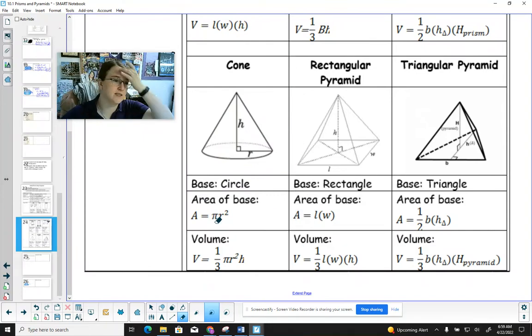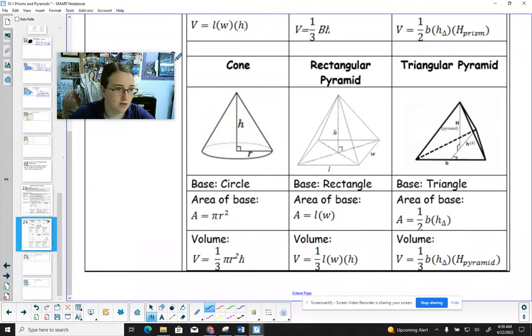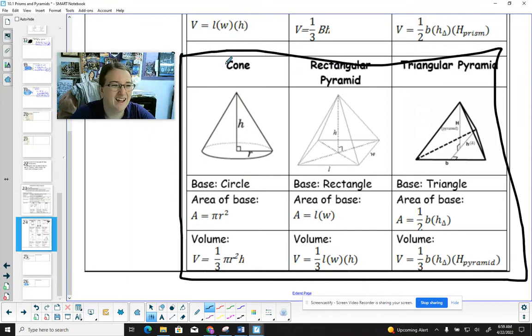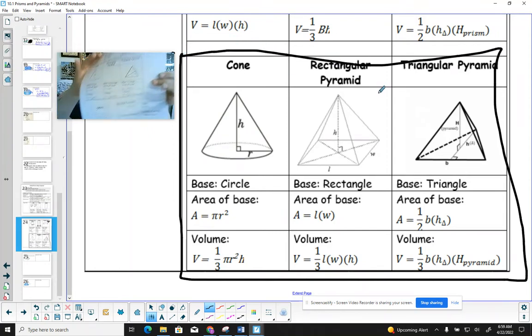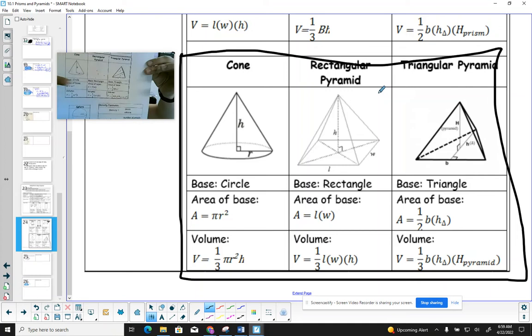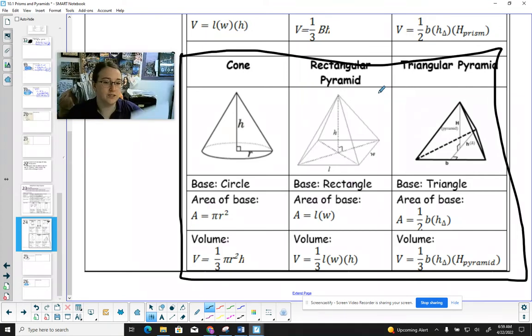Okay, so on your formula sheet, you should see these three formulas. Again, we just talked about prisms and cylinders yesterday. Now we're going to be talking about these three. A cone, a pyramid, a rectangle pyramid, and a triangular pyramid. Those three are right there on the bottom of your formula sheet.